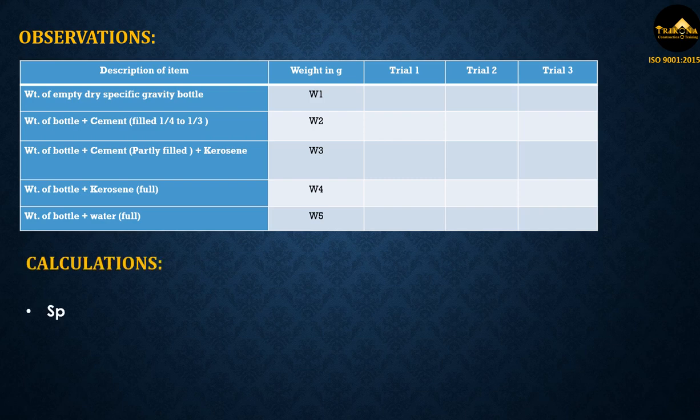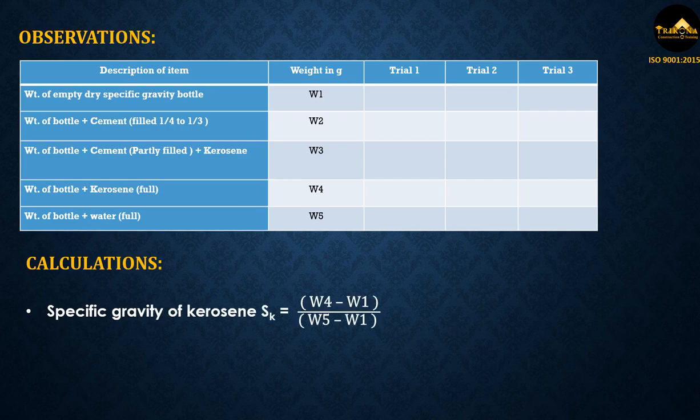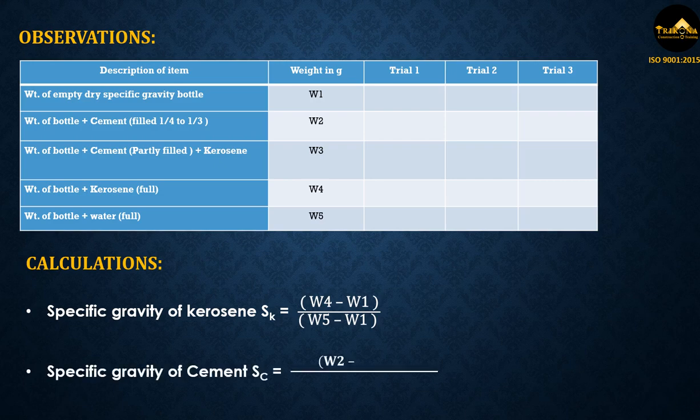Calculations: Specific gravity of kerosene SK = (W4 - W1) / (W5 - W1). Specific gravity of cement SC = (W2 - W1) × SK / (W4 - W1 - (W3 - W2)).